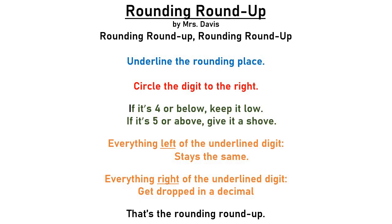Rounding, round up. Rounding, round up. Underline the rounding place. Circle the digit to the right. If it's four or below, keep it low. If it's five or above, give it a shove. Rounding, round up. Everything left of the underline digit stays the same. Everything right of the underline digit gets dropped in a decimal. That's the rounding, round up.